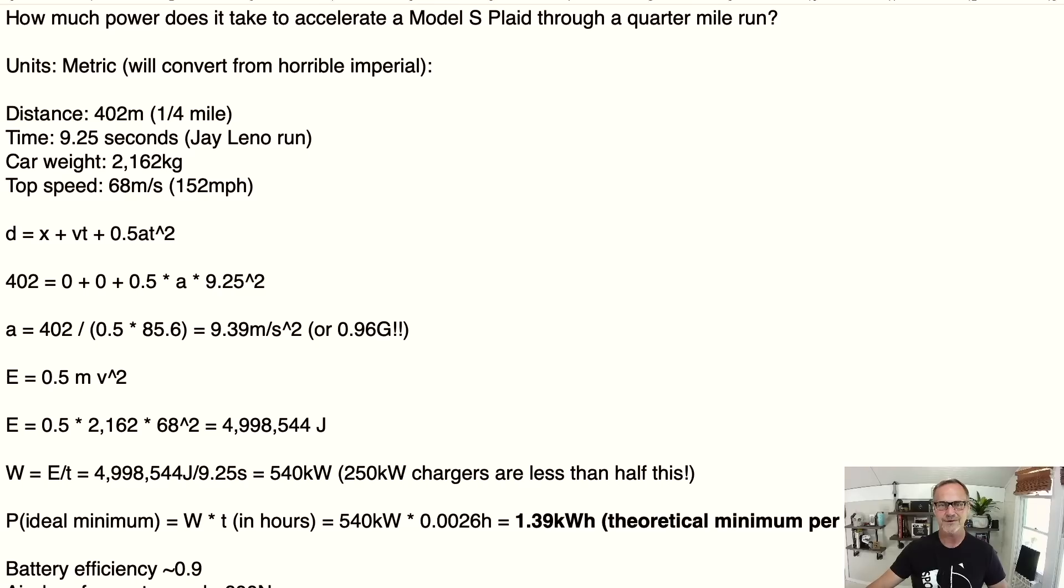So then we get to some nice high school physics. We have our distance traveled equals x₀ + v₀t + ½at². x₀ is zero because we're starting at zero. v₀ is zero because we're starting at zero miles per hour. So we have 402 meters equals one half times the acceleration times 9.25 seconds squared. So we can work all that stuff around and we end up with 9.39 meters per second squared, or 0.96 Gs.